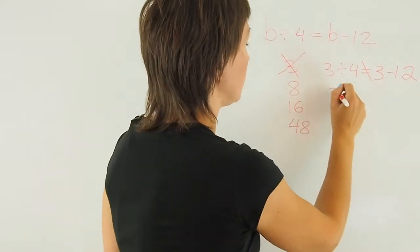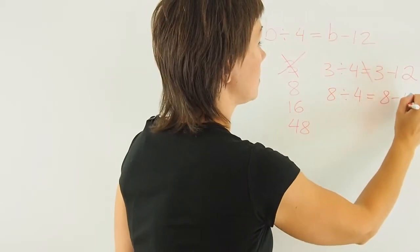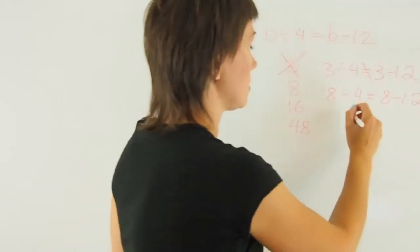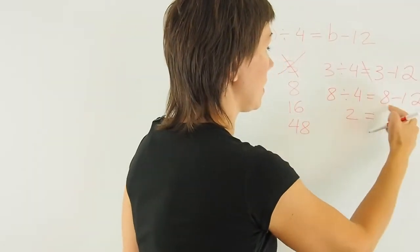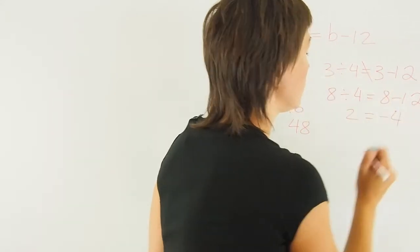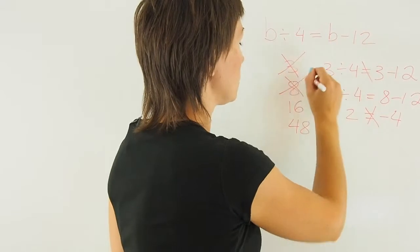Let's test 8. 8 divided by 4 equals 8 subtract 12. 8 divided by 4 is 2, 8 subtract 12 is negative 4. So that also doesn't work, so that is done.